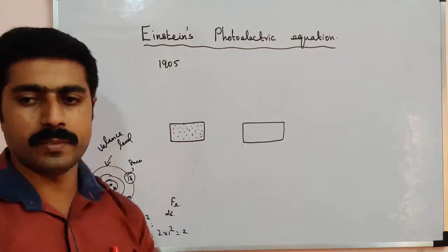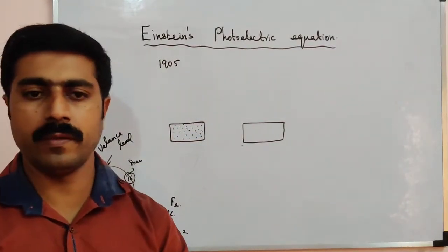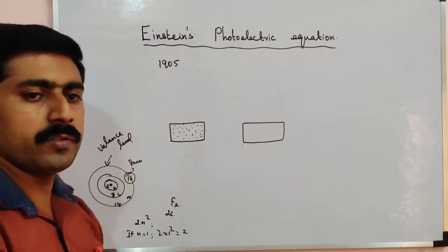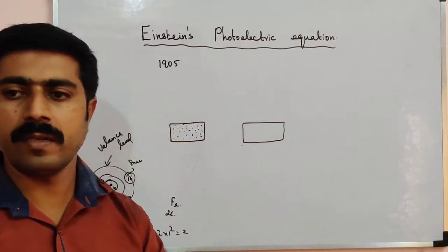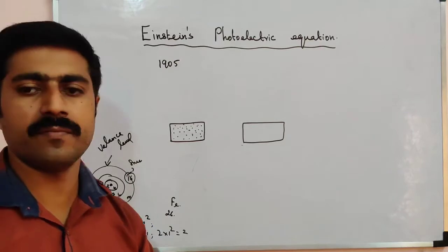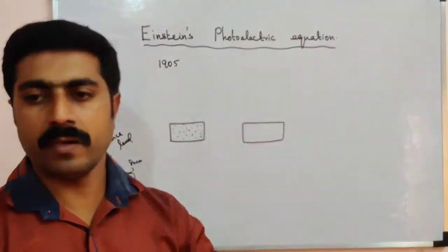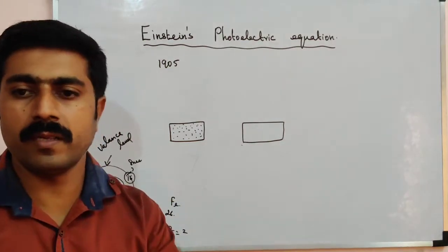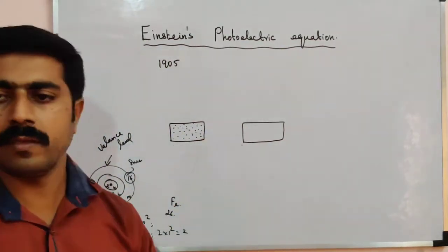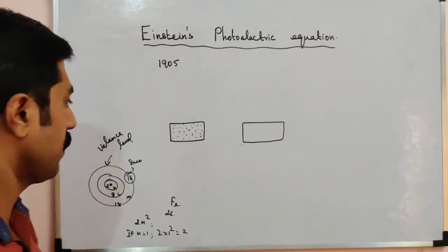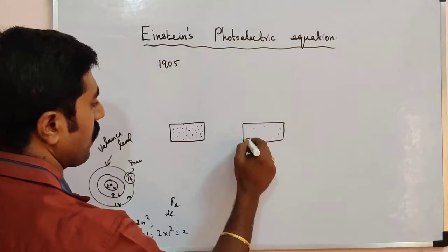Emission is not possible without additional energy. Over the metal surface, there are barriers which prevent the electrons from leaving the metal surface. So these barriers prevent electron emission from the metal.